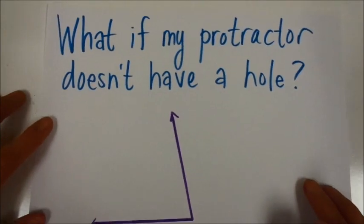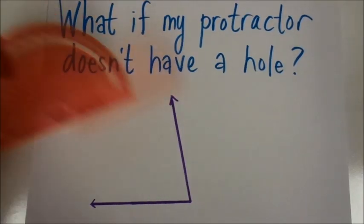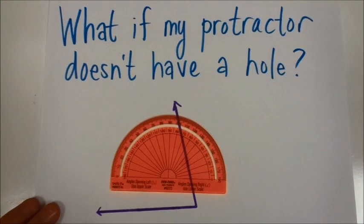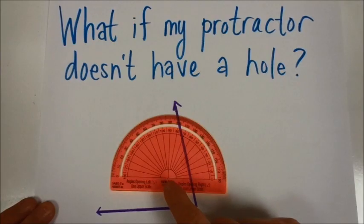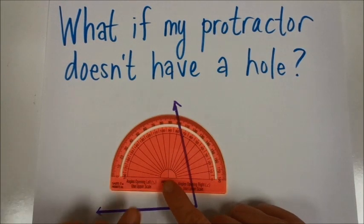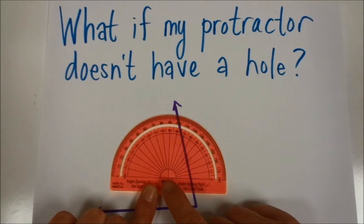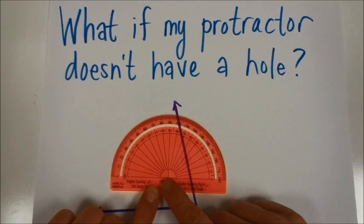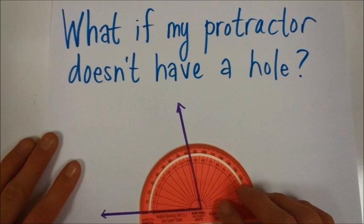The next what if that you might encounter is, what if you are given a protractor to use that doesn't have a hole? There's no hole down here on this particular protractor, it's all one piece. In this case, you can see that the lines are intersecting right here at the bottom. Instead of the hole, that's where you place your vertex, is where the lines intersect right here at a right angle, perpendicular lines.